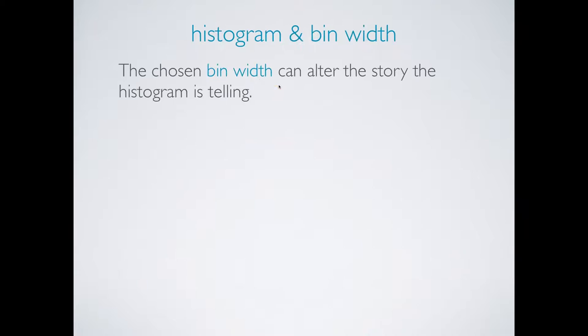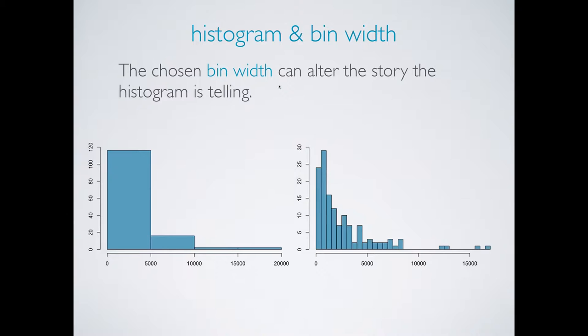We should also note that the chosen bin width of a histogram can alter the story the histogram is telling. When the bin width is too large, we might lose interesting details. When the bins are too narrow, it might be difficult to get an overall picture of the distribution. The ideal bin width depends on the data you're working with, so you should try playing with it until you're satisfied with the visualization.